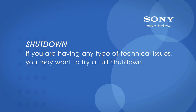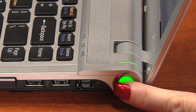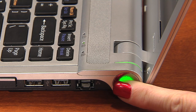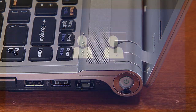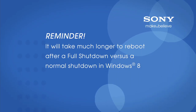If you are having any type of technical issue, you may want to try a full shutdown. Press and hold down the power button for 5 seconds. This will perform a complete shutdown of the system.